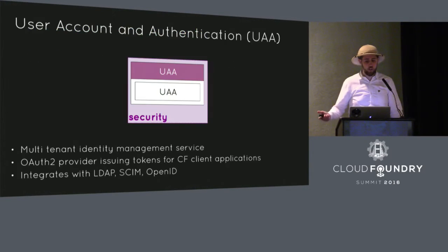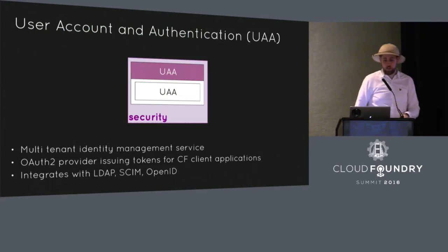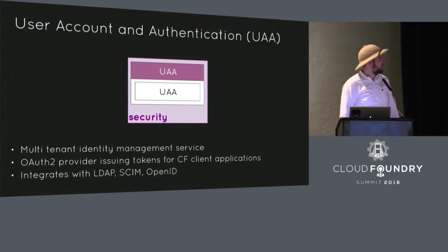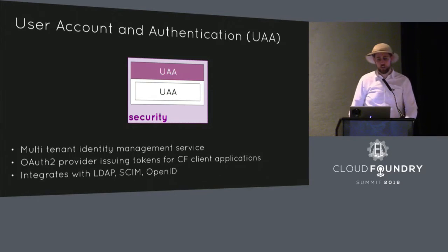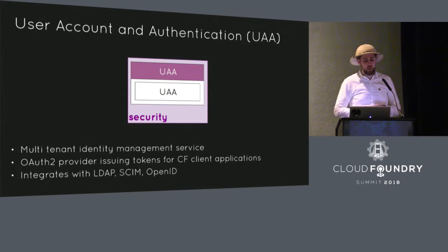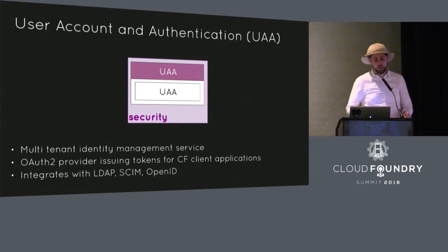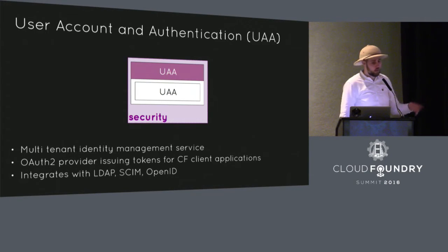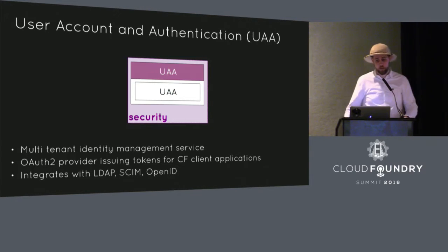We do this through a component called the User Account Authentication service. This is the primary authentication system you'll see used across most Cloud Foundries. The CLI receives the UAA information from a component called the Cloud Controller. This performs an OAuth dance — it's based on OAuth 2 and can back onto LDAP, SCIM, and OpenID. It's actually built as a Spring MVC scalable web app — one of the only Java components left in Cloud Foundry at the moment.